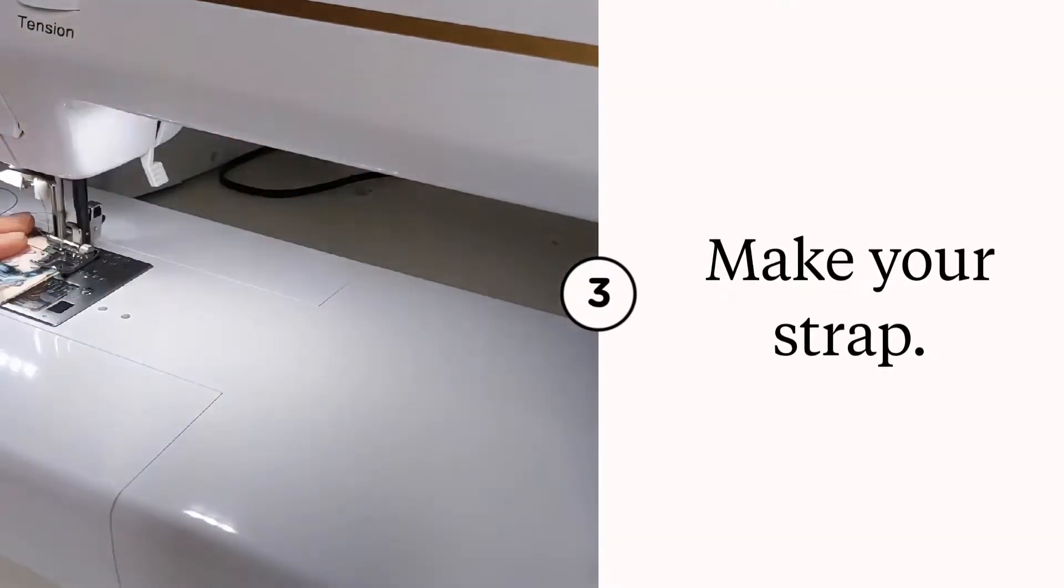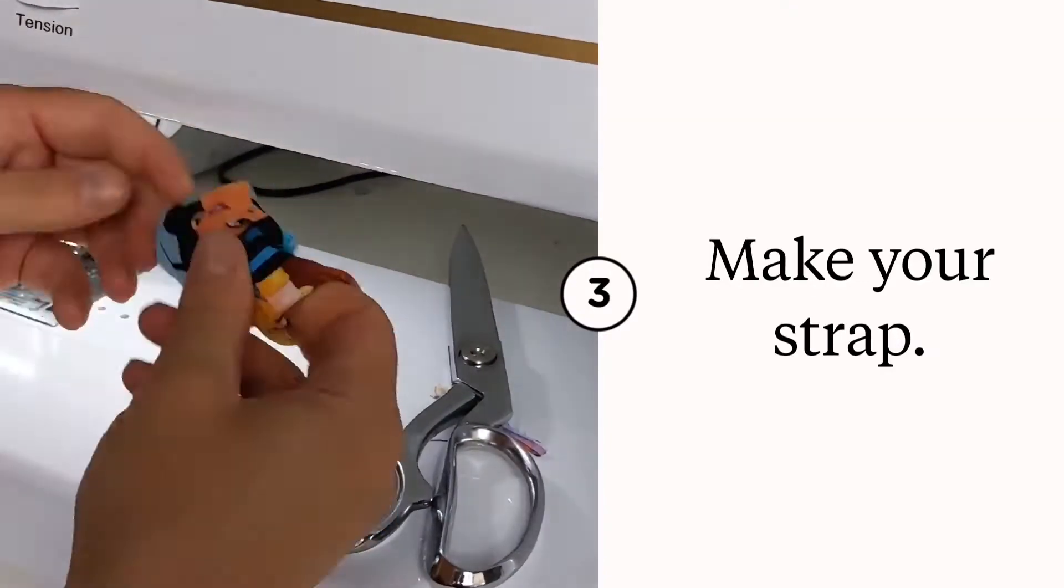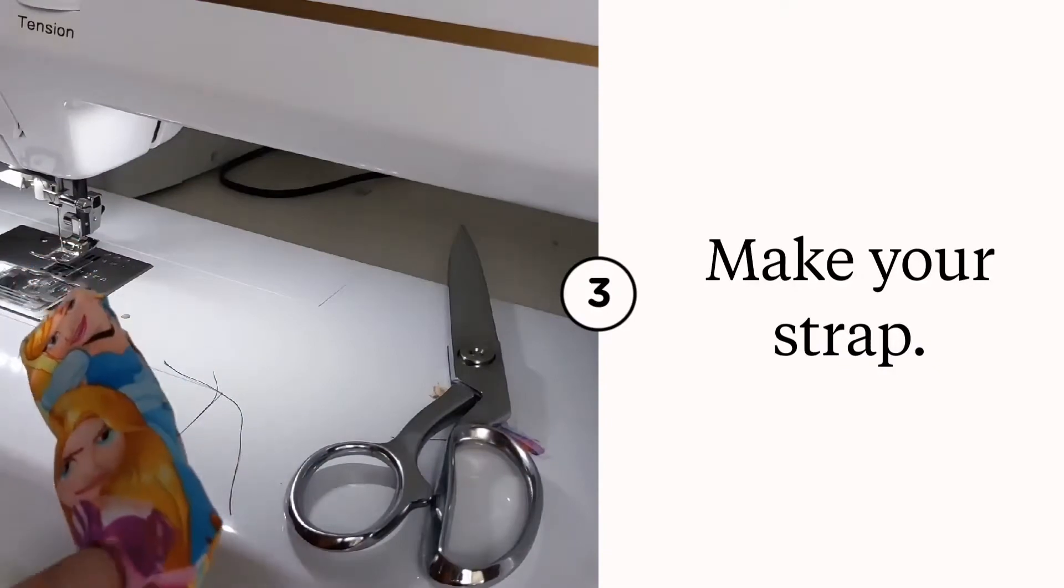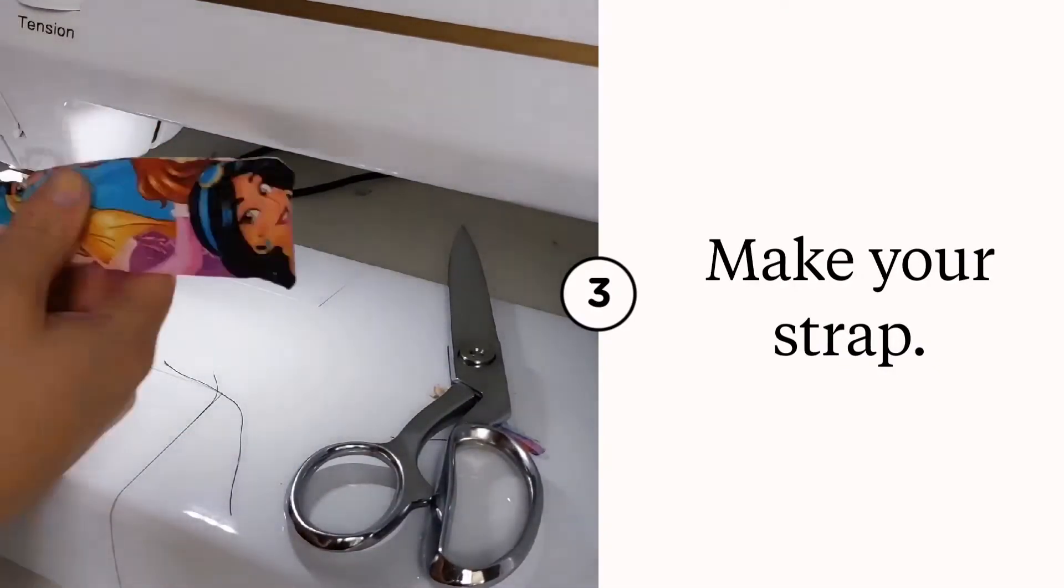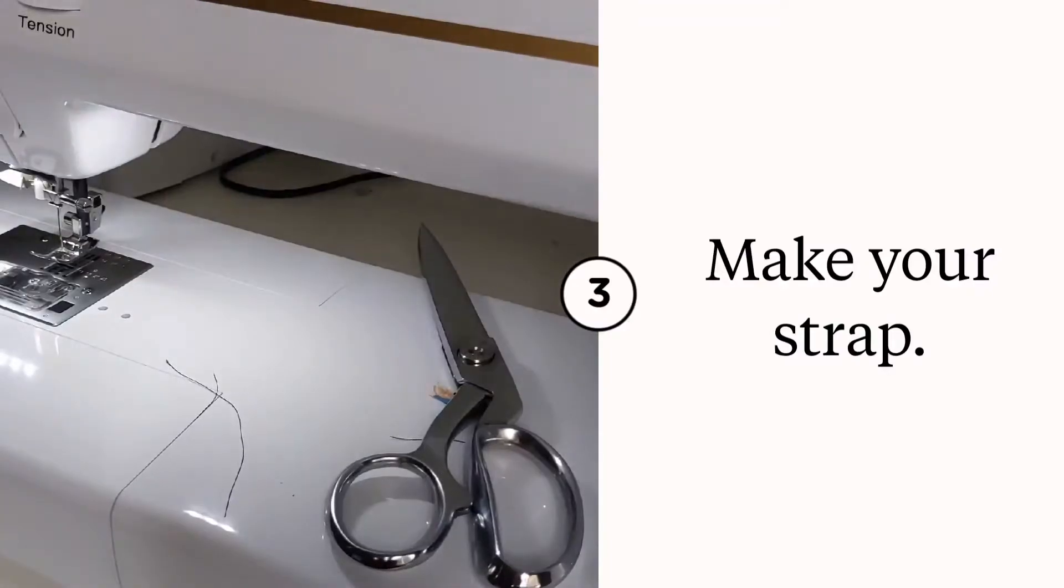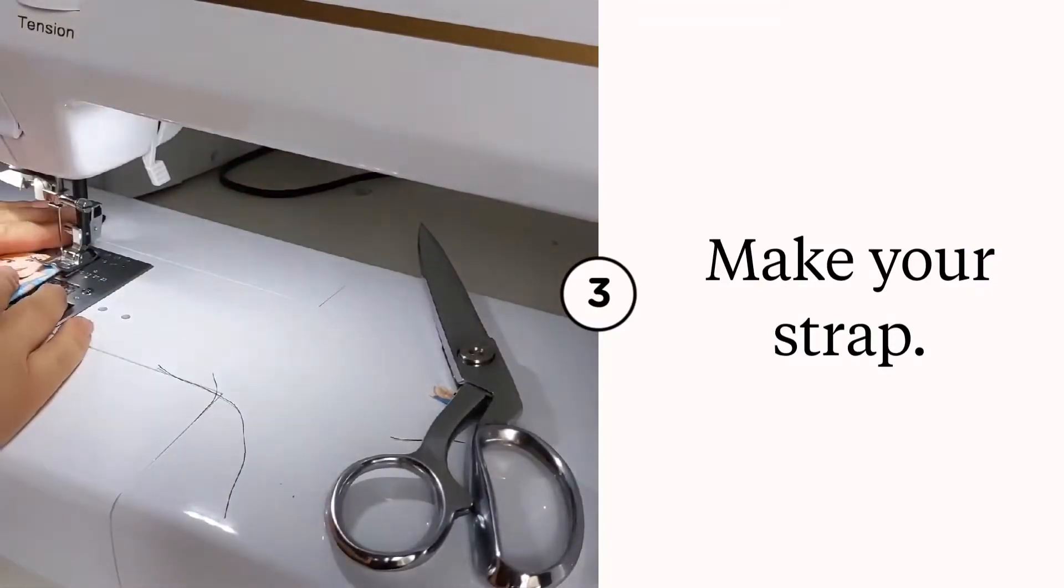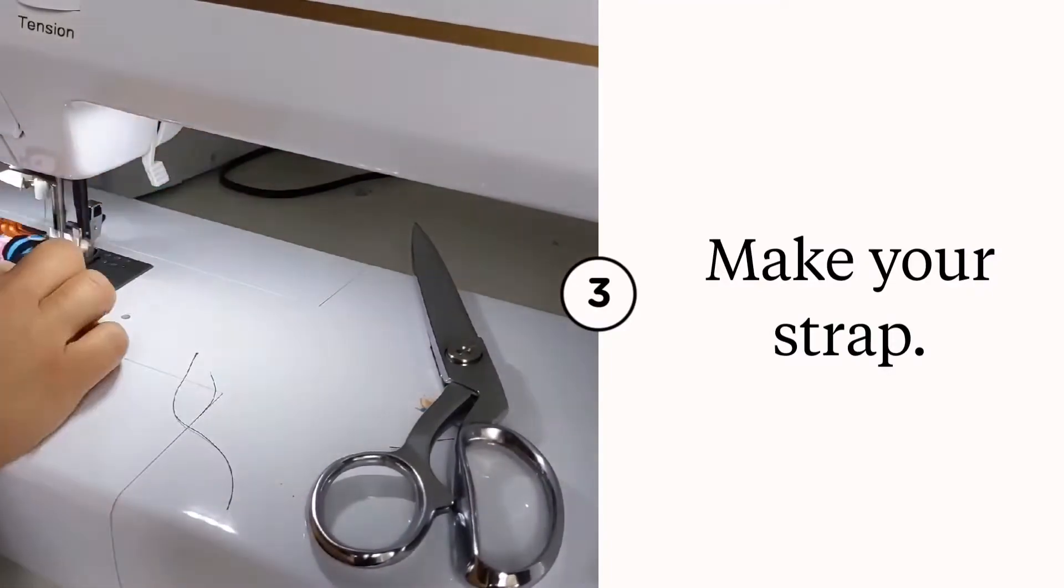Now you need to make your strap. You're going to sew along one short side and one long side, so now you have one short side that's open where you'll turn it right sides out. Kind of poke out the edges with something dull like a chopstick, press it, and then top stitch one end. The short end that's unfinished can stay unfinished.